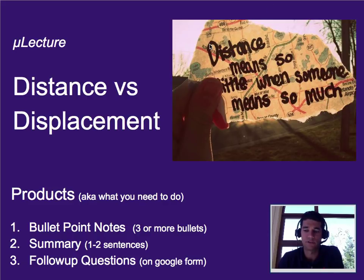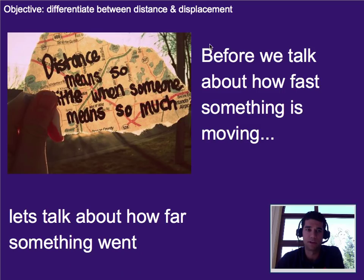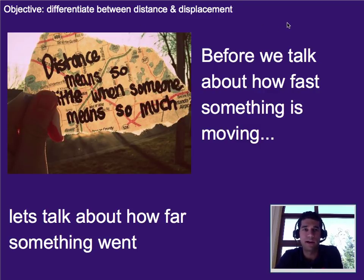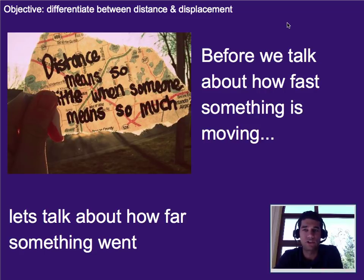This microlecture is on distance versus displacement. Before we get started, notice that I list the objectives up at the top — usually it'll be one objective per microlecture, but sometimes we'll do two or three. This unit we're talking about motion, but before we can really talk about how fast things are going, we need to talk about how far something went.